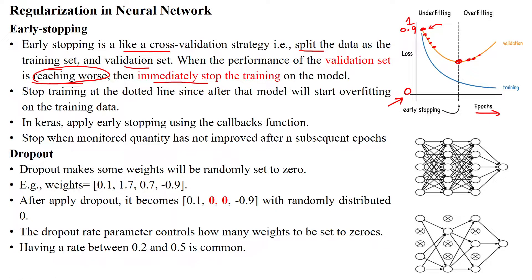Once the validation loss reaches its worst case, we can stop the training of the model. The validation and training run in parallel in the neural network. We stop the training at the dotted line — at this dotted line, we stop the epochs of the training phase.